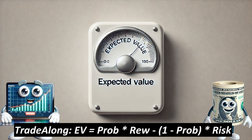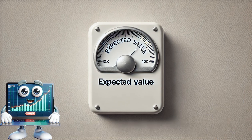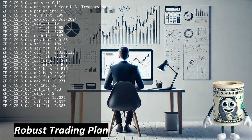Assess both the potential risk and reward of the trade, and then use the probability to determine the expected value. Adjust the trade size according to your maximum risk tolerance, and make sure the expected value surpasses the required threshold before proceeding. We initially analyzed this trade from an expected value standpoint, considering it as a credit spread while keeping the potential for assignment in mind. Ultimately, this trade allows us to earn a premium from the option. If it gets assigned, we can manage it as a regular trade at a favorable price.